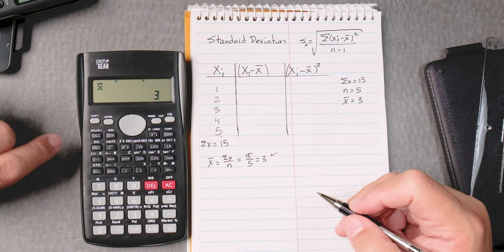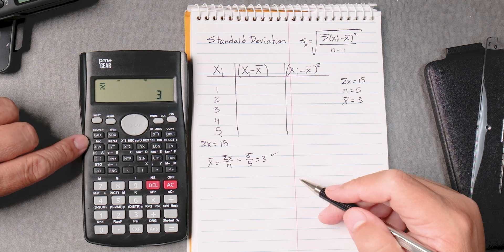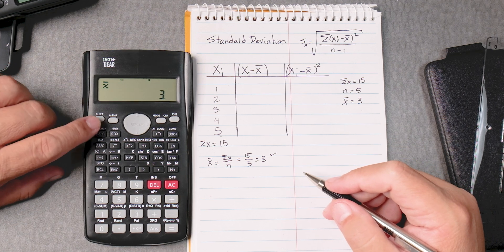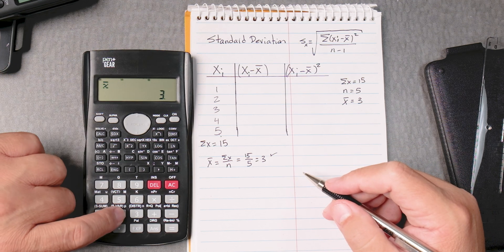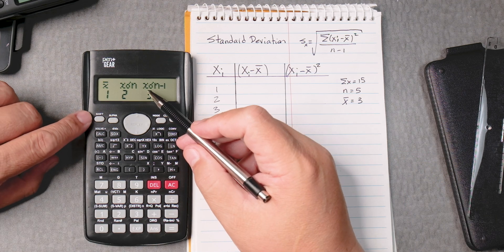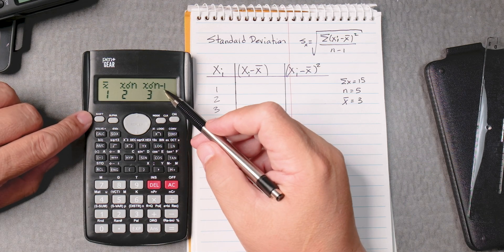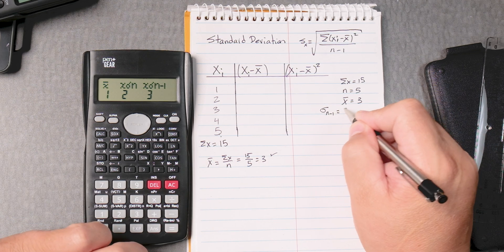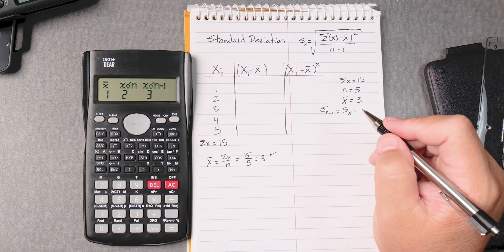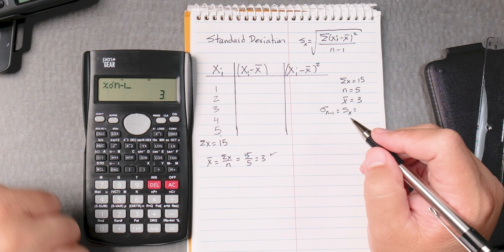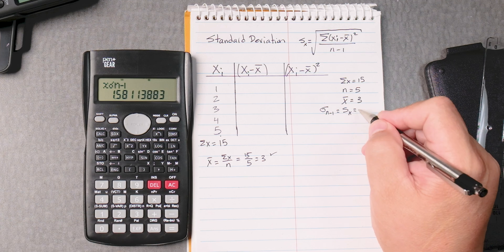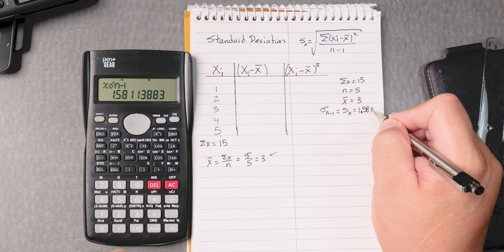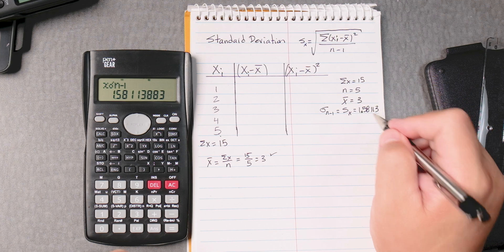Now, the calculator is to check for your understanding of how to do these things to lower your anxiety. So if we press shift number 2, we can see that we have this x sigma n minus 1. The sigma n minus 1 is really the standard deviation or the sample standard deviation. So I'm going to press 3 and then equals 1.58113. That's the answer.